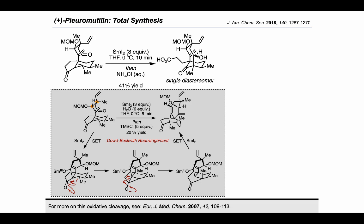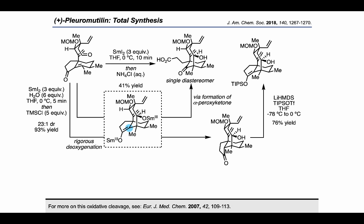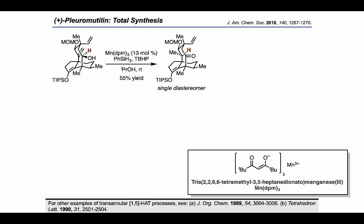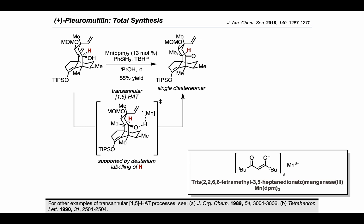The authors converted the ketone present in the product of the ketyl radical cyclization into a silyl enol ether by treatment with LiHMDS and TIPS triflate. They then found that any attempt to reduce the 1,1-disubstituted alkene using traditional hydrogenation conditions with a cationic transition metal led to reduction of the monosubstituted alkene instead. To get around this, they used a manganese DPM complex which allows a transannular 1,5-hydrogen atom transfer, proposed to go through a specific transition structure. Using a deuterium-labeled substrate, they determined which hydrogen is delivered to the 1,1-disubstituted alkene during this step, and were able to form a single diastereomer of the product.